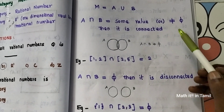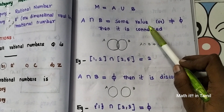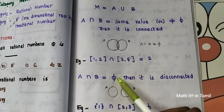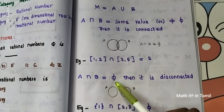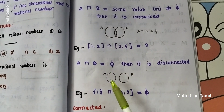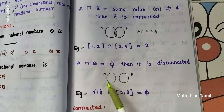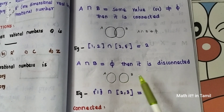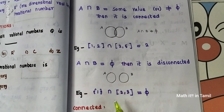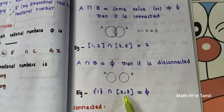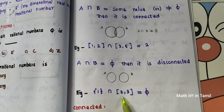Disconnected means the intersection is empty. If we have A and B and the intersection is empty — the common point does not exist — this is disconnected. For example, {1} intersection [2,3]: the common point is empty, so this is disconnected.